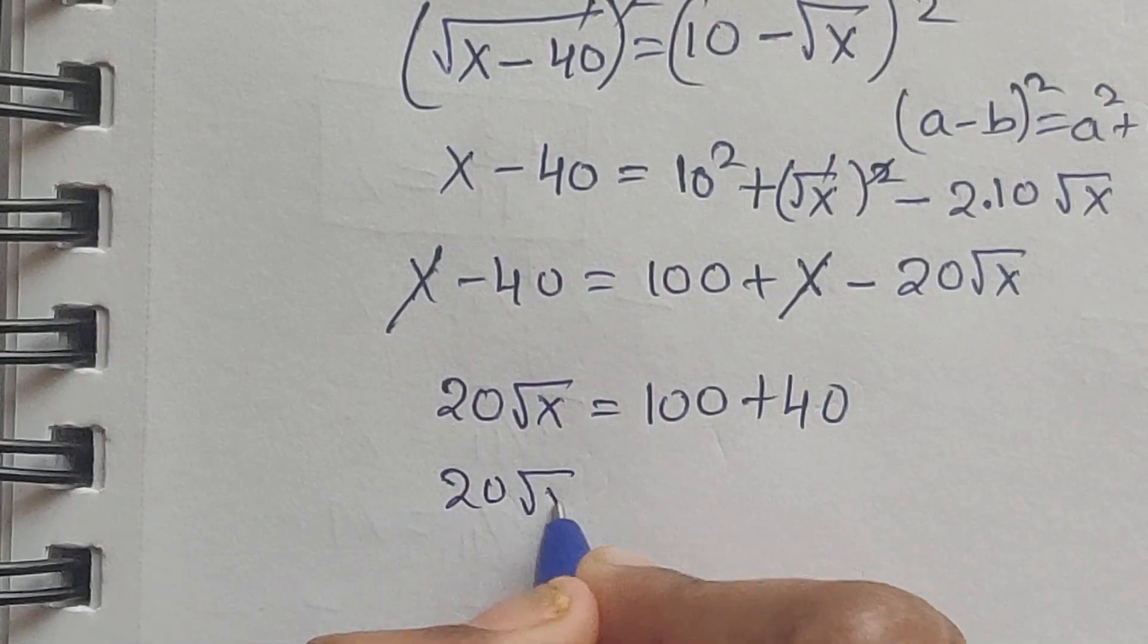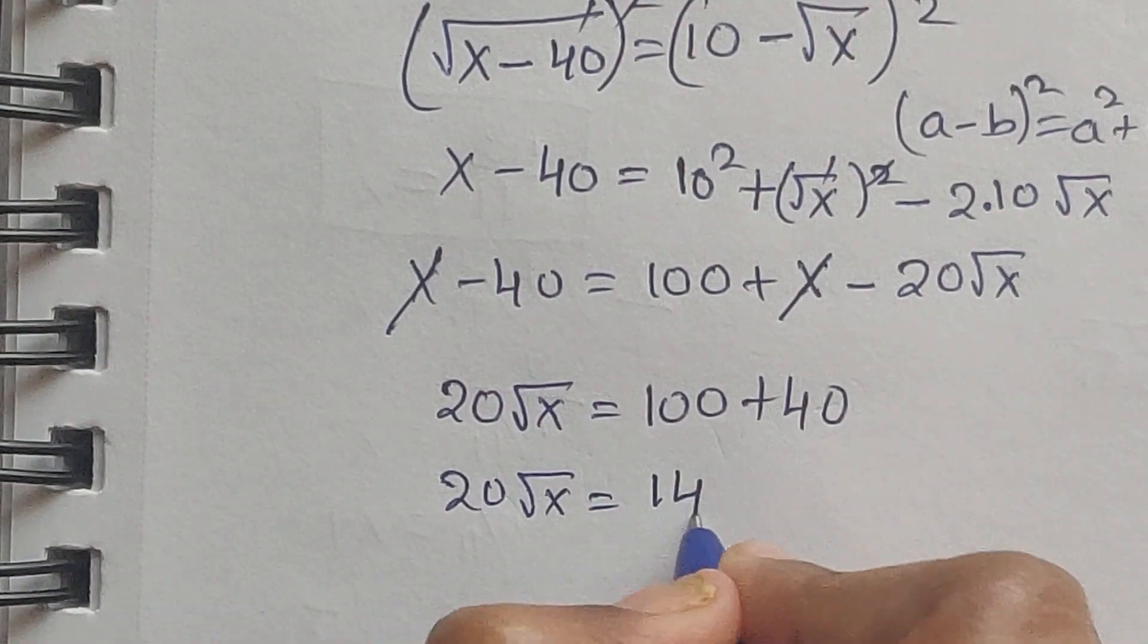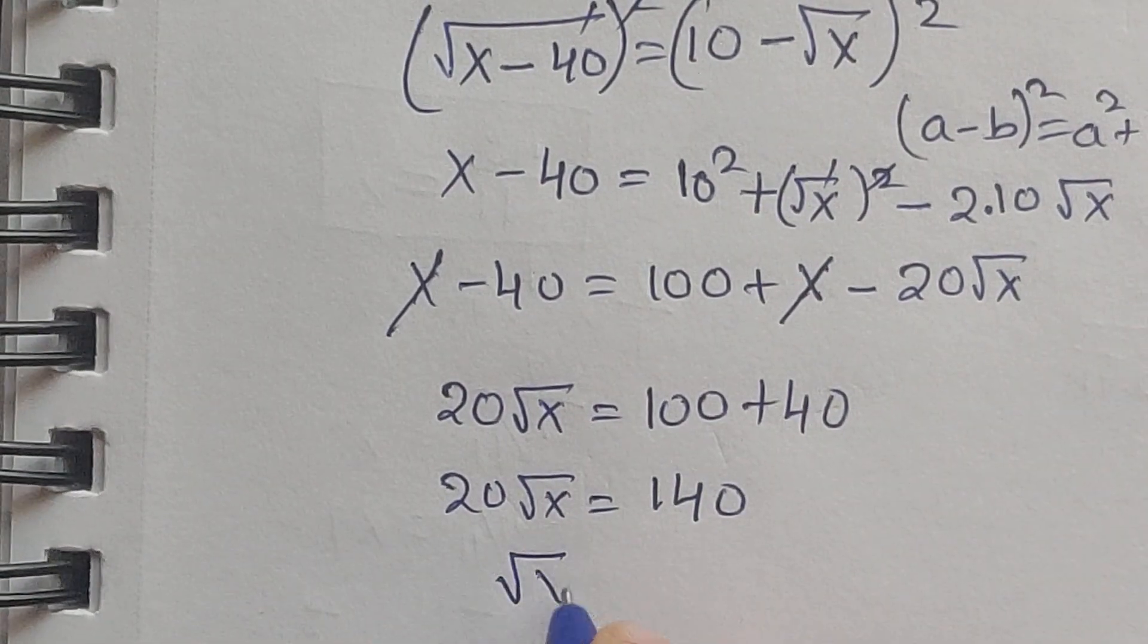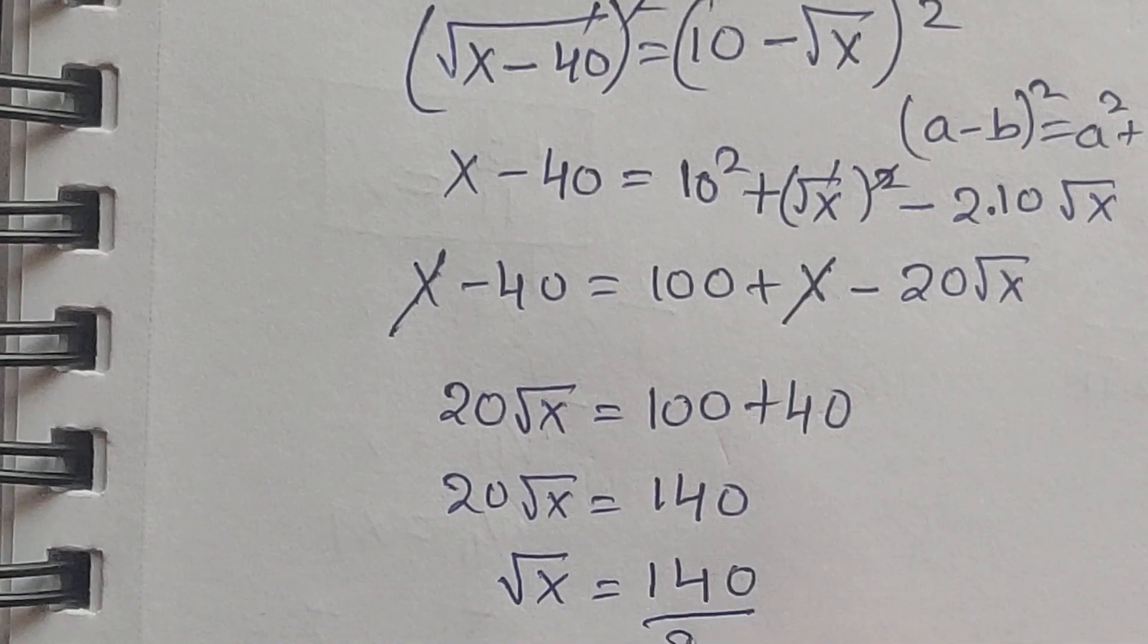So here x minus 20 square root of x equal to 100 plus 40 which is equal to 140, and square root of x equal to 140 divided by 20.